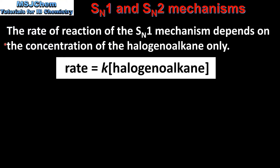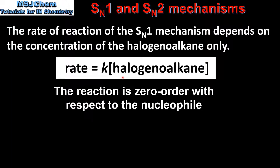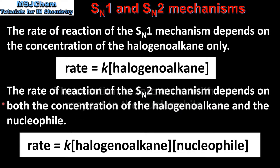Next we will look at the reaction kinetics of each mechanism. The rate of reaction of the SN1 mechanism depends on the concentration of the halogenoalkane only. The 1 in SN1 stands for unimolecular. Here we have an example rate expression. From this we can see that the order of reaction is first order with respect to the halogenoalkane.